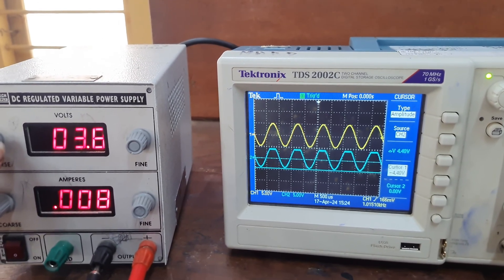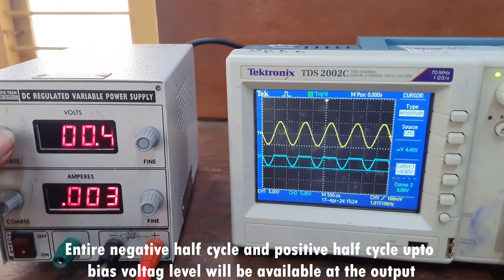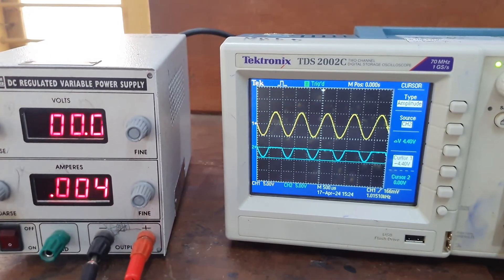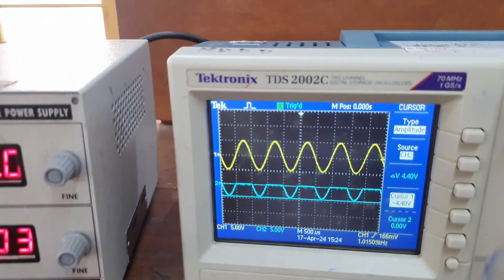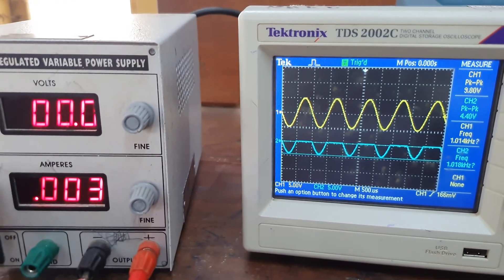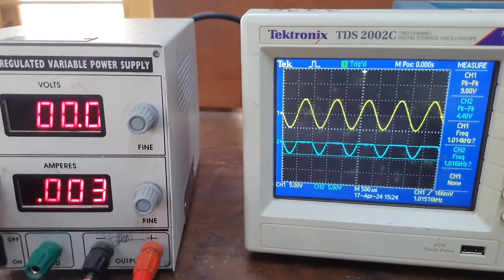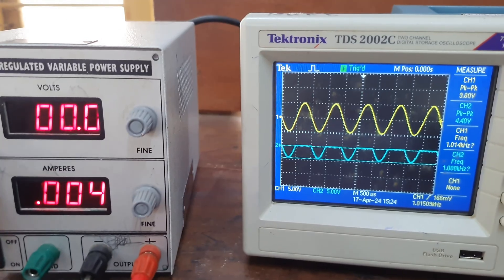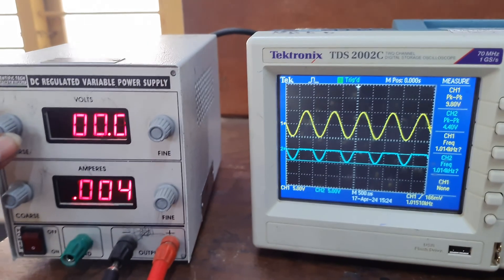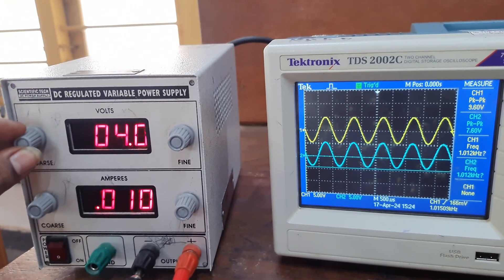When we increase the biasing voltage, the traces will be more. When we decrease the positive bias voltage to 0, this circuit will behave as a positive series clipper with no bias. Now change the bias voltage and observe the difference in the output of this circuit.